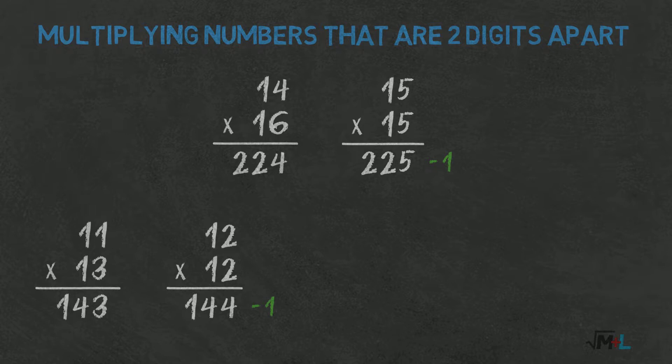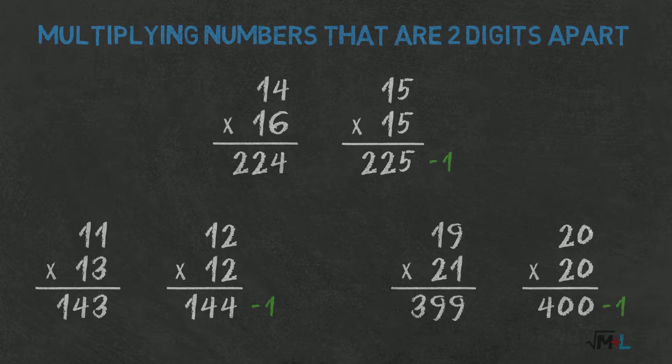So as you probably figured out, 19 times 21 will be the same as the square of 20. So 400 minus 1. 399. And indeed that is the right answer.